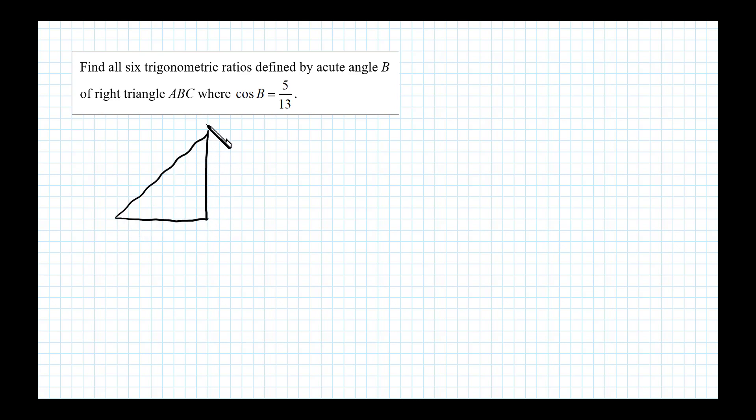We'll label the angles A, B, and C. We'll assume the right triangle has a 90-degree angle here at C. The ratio given is 5/13 for cosine.